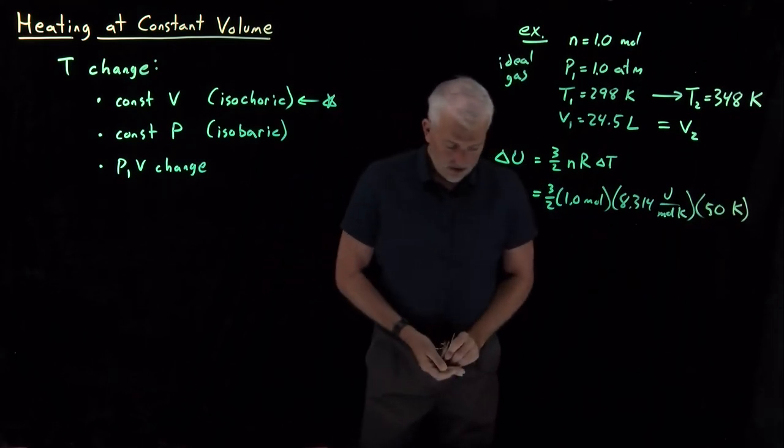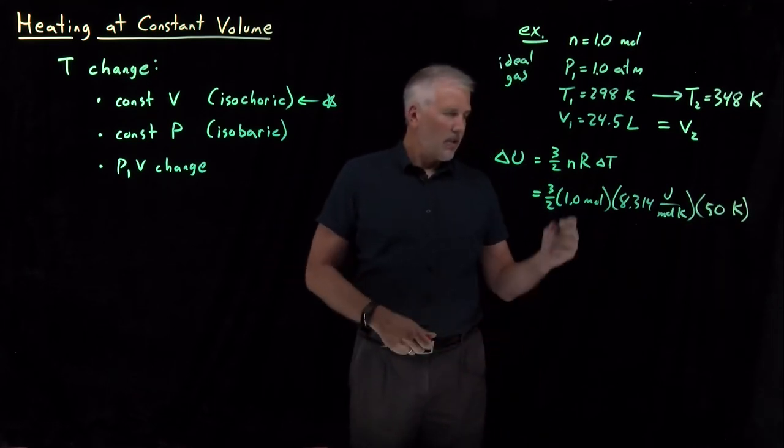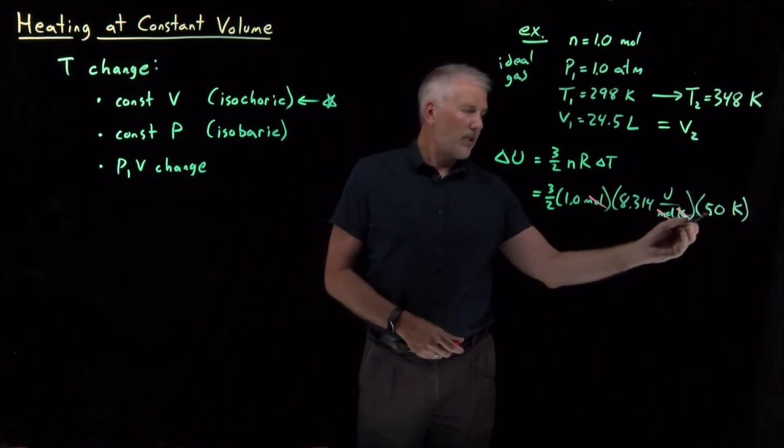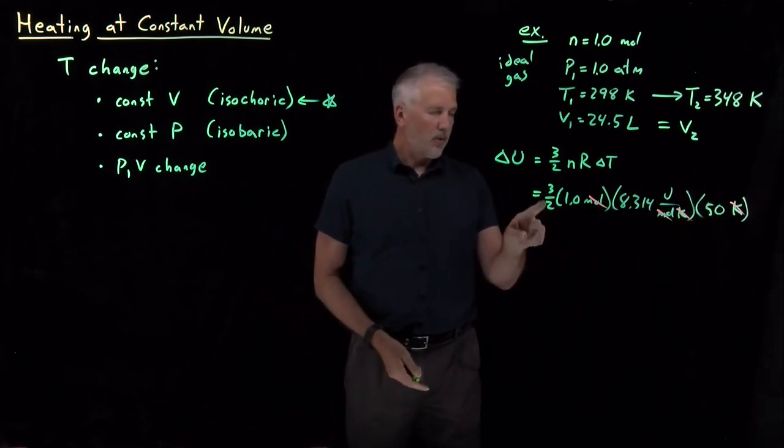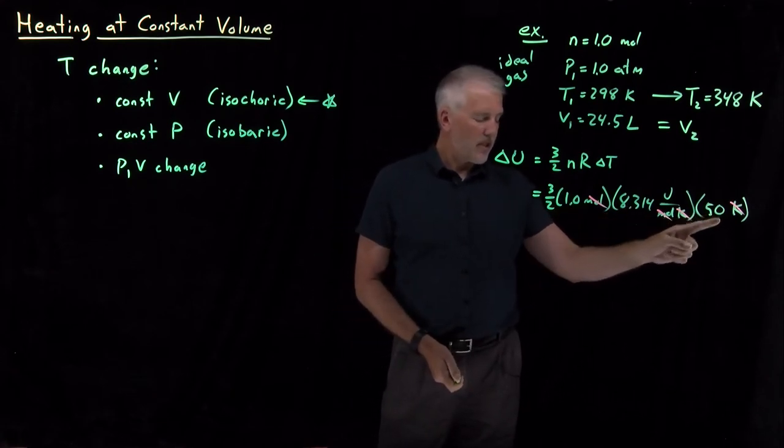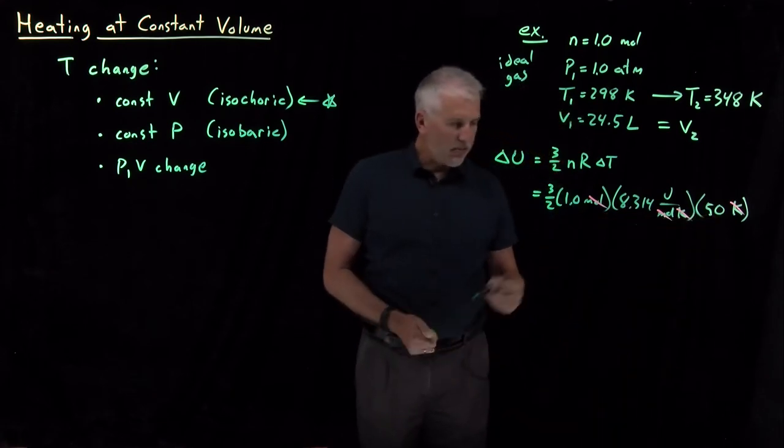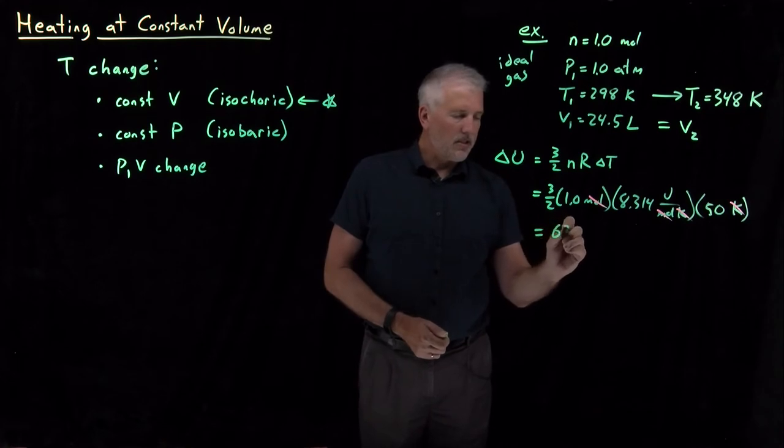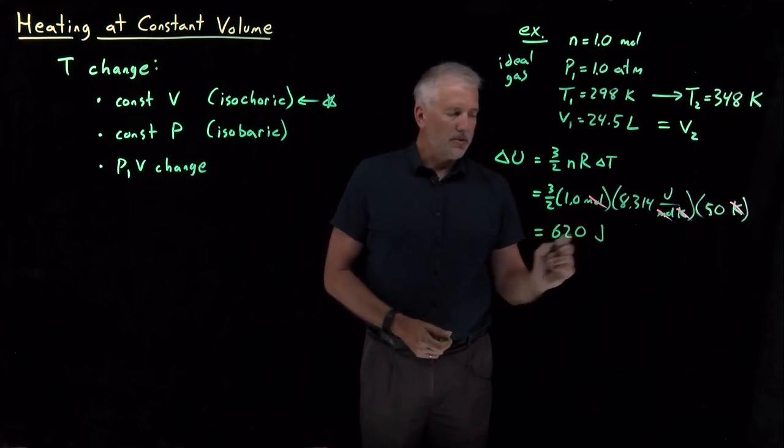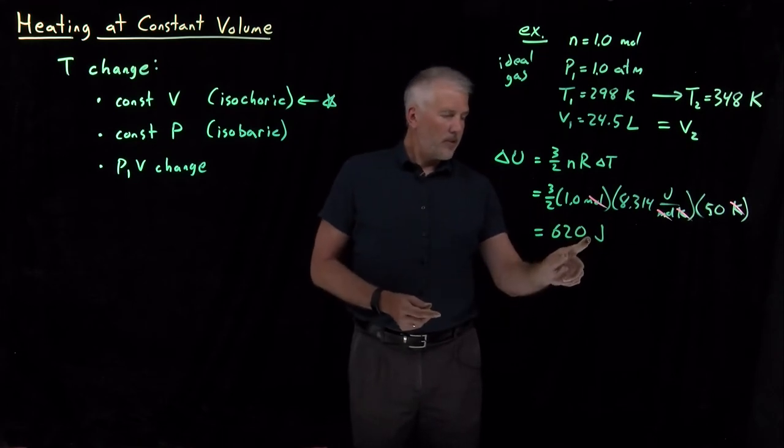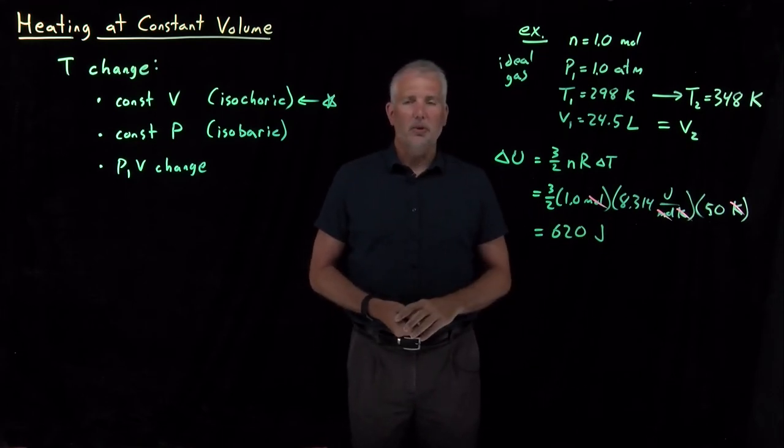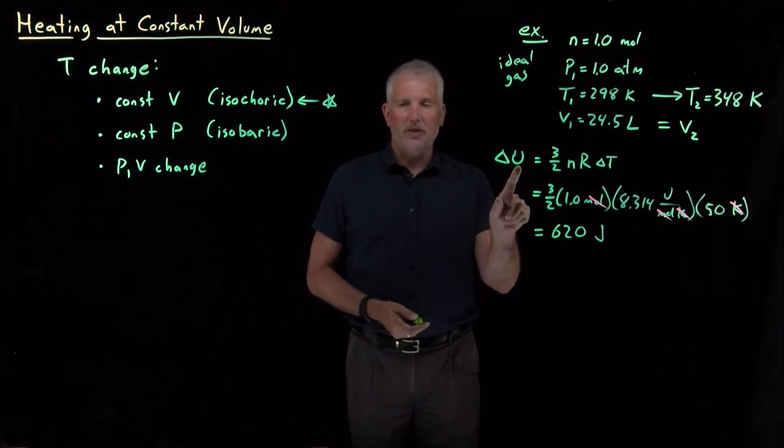Then just to double check the units, I've got moles canceling moles and Kelvin canceling Kelvin. So what I'm left with is joules. So one and a half times a mole times the gas constant times 50 Kelvin. That works out to be 620 joules. So actually just two sig figs is fine. So 620 joules is the change in the internal energy of a gas.